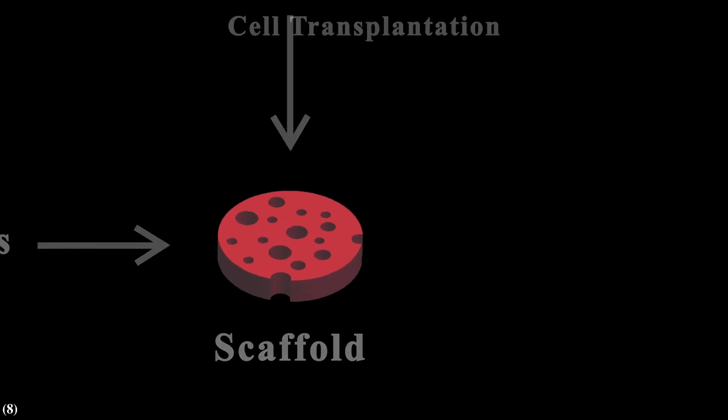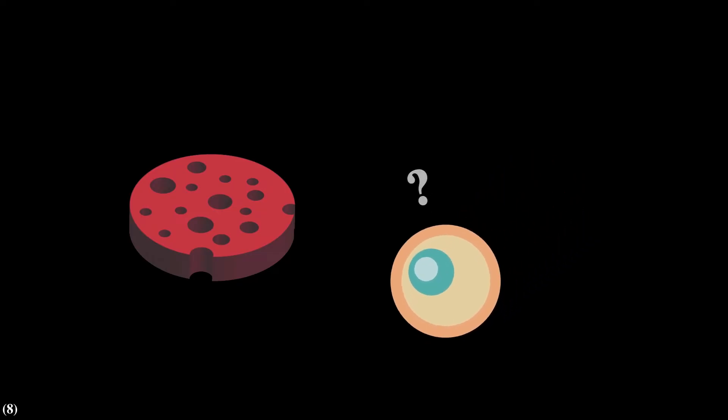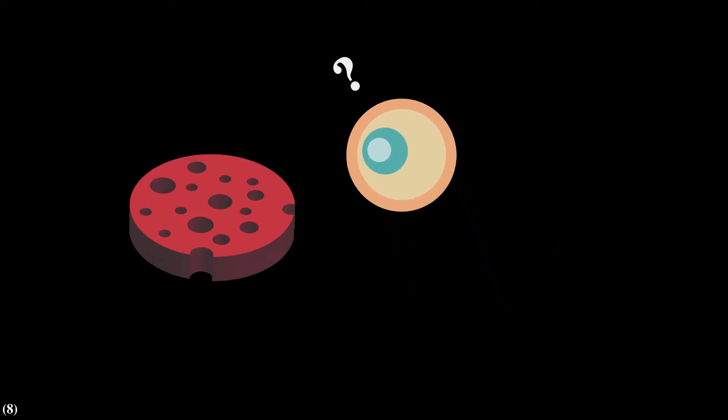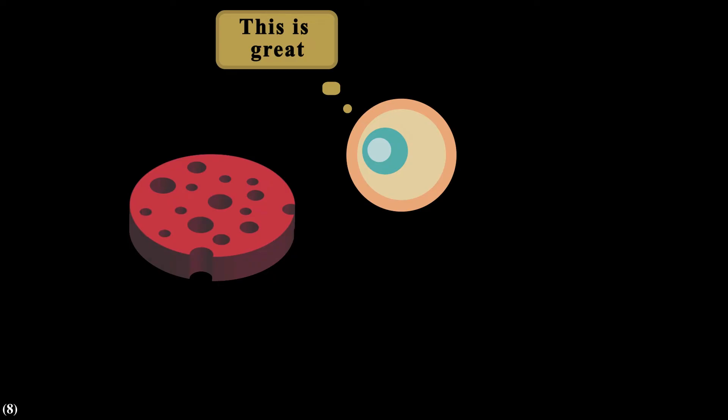But not all scaffolds and biomaterials are favorable for our cells. Our cells are really strict and picky about their environment. After considering a variety of factors, they can change their behaviors. What I mean by behavior is that they can run away or they can move towards and attach to the scaffold. They can proliferate and differentiate into different cells, and they can signal to other cells to do the same thing. So what are those factors, and how they can affect the behavior of our cells?